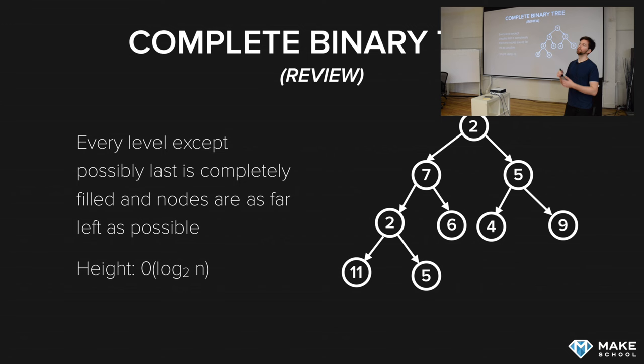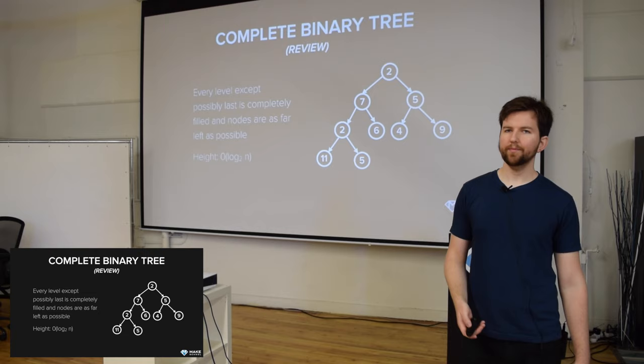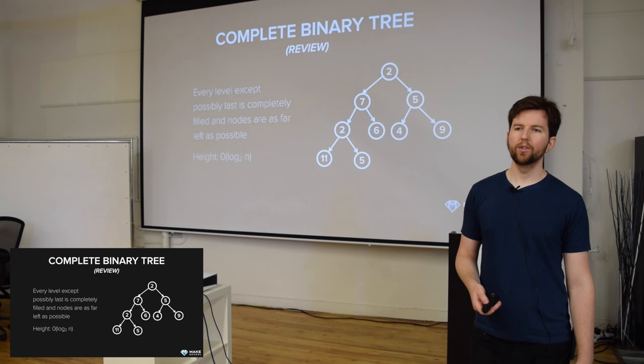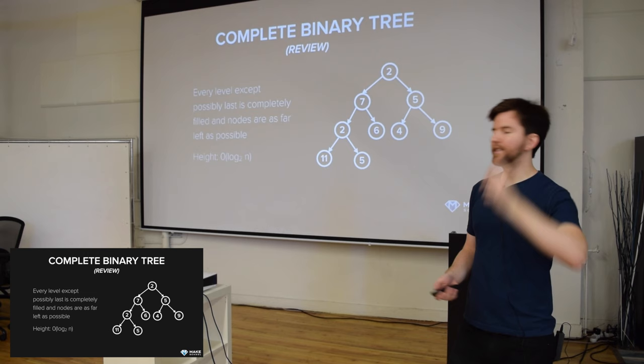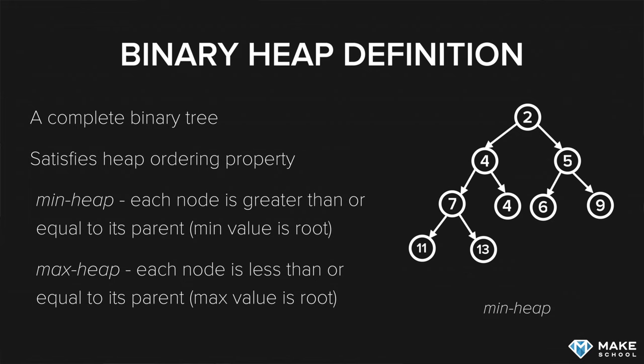And then you take the floor of that — you truncate the decimal places. So that gives us a height of three. Log base two of nine is like three. And if we look: one, two, three — that is the height of our tree. So that means if we know the size, we can calculate the height in constant time using this simple algorithm.